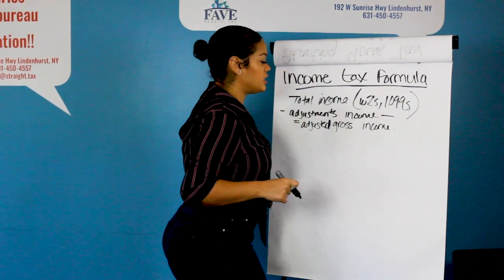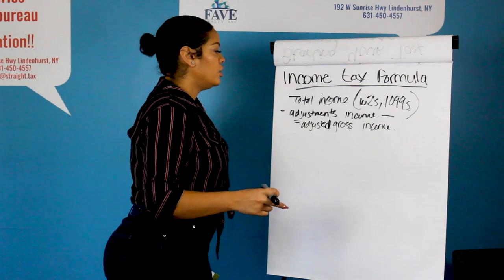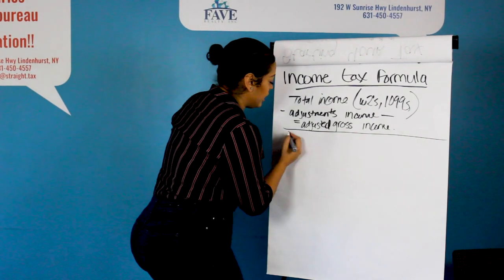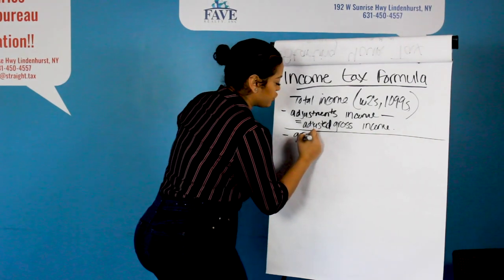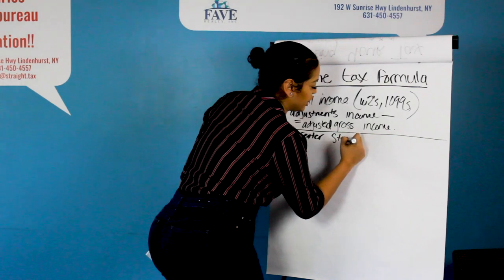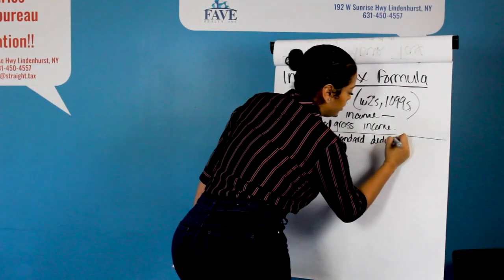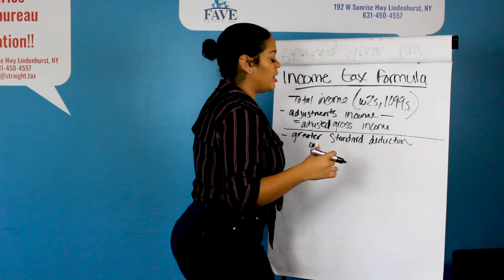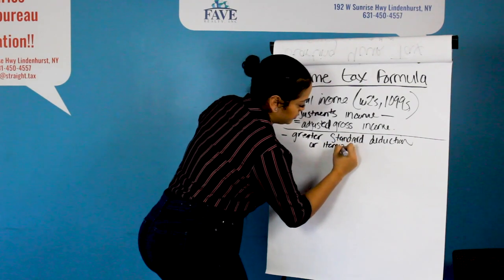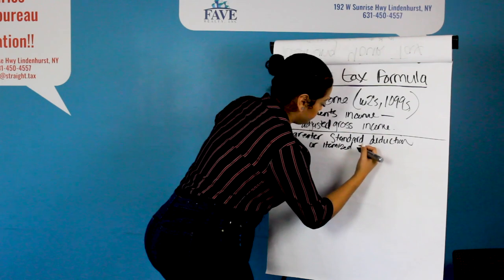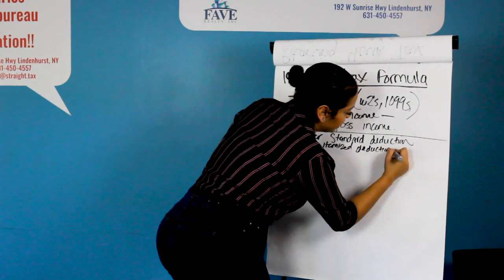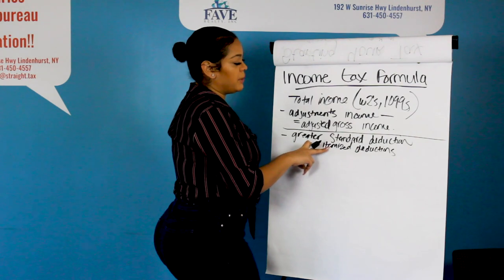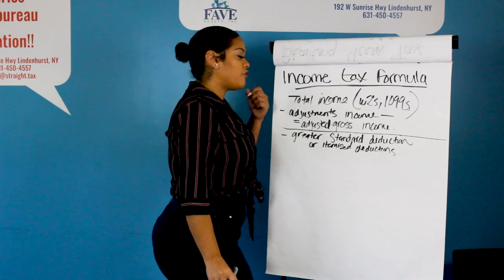So we have total income minus adjustments to your income equals your adjusted gross income. What comes next? Deductions. Your adjusted gross income is going to minus whatever is greater — this is going to be either your standard deduction, which the government gives everyone, or if you're somebody who itemizes, meaning you add additional deductions to your income, like real estate taxes, medical expenses, or anything that qualifies for your itemized deductions after Trump changed the GOP tax plan.